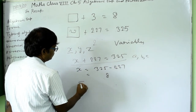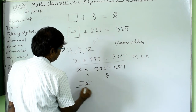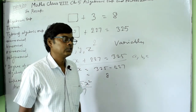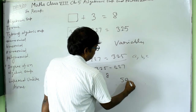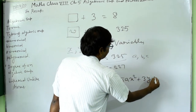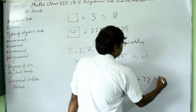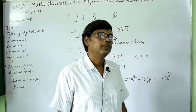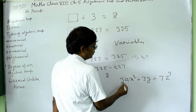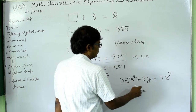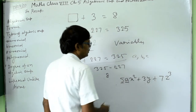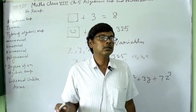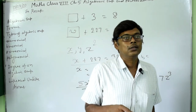When you combine variables, constants, and operations like addition, subtraction, multiplication, and division in one form, you get an algebraic expression. For example: 5x²/7, or 5ax² plus 3y plus 7z, are all algebraic expressions. Here 5 and a are constants, while x, y, z are variables.